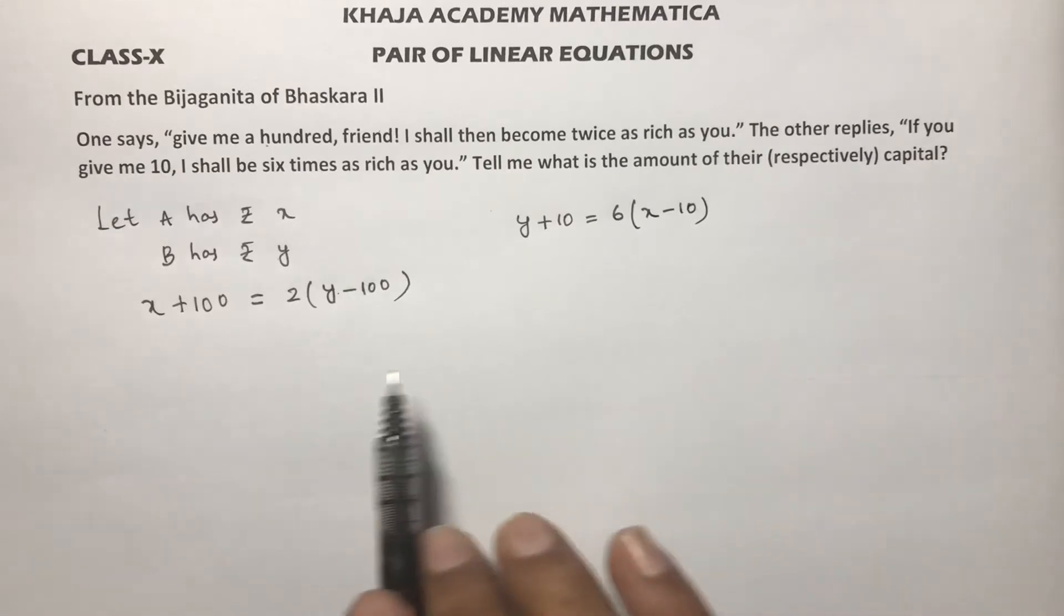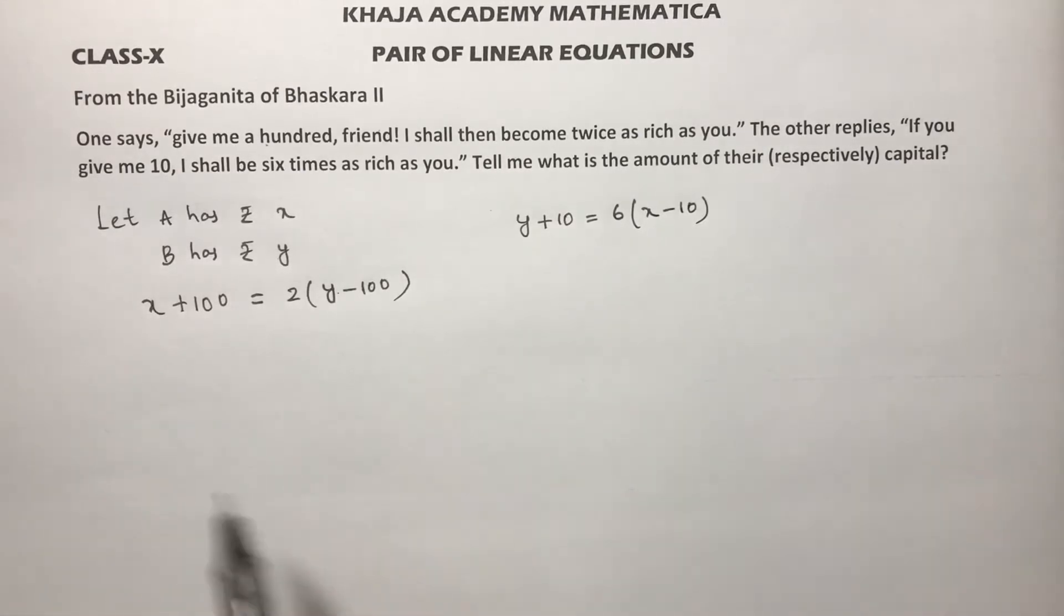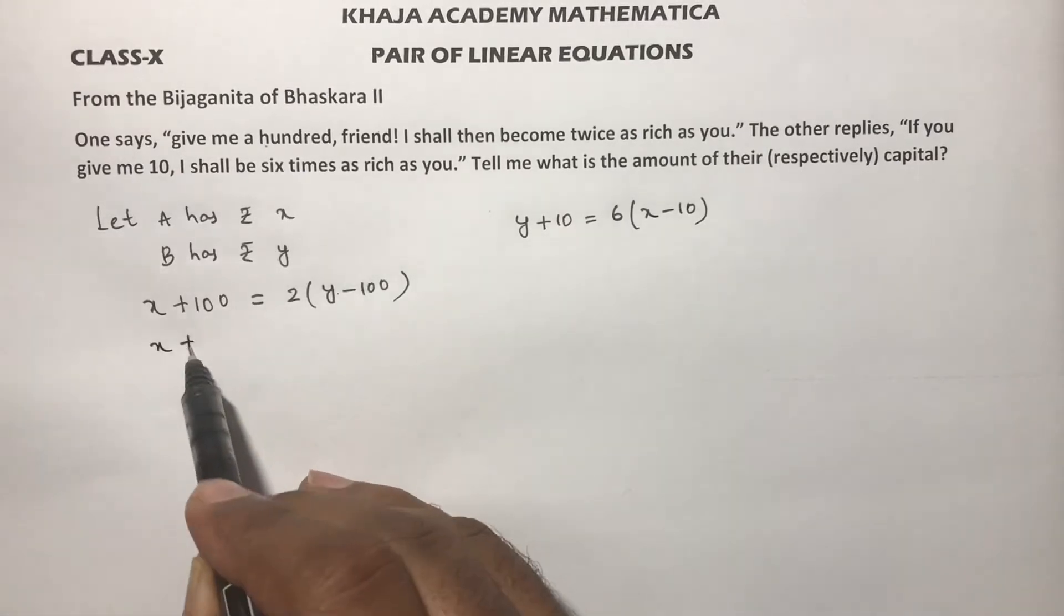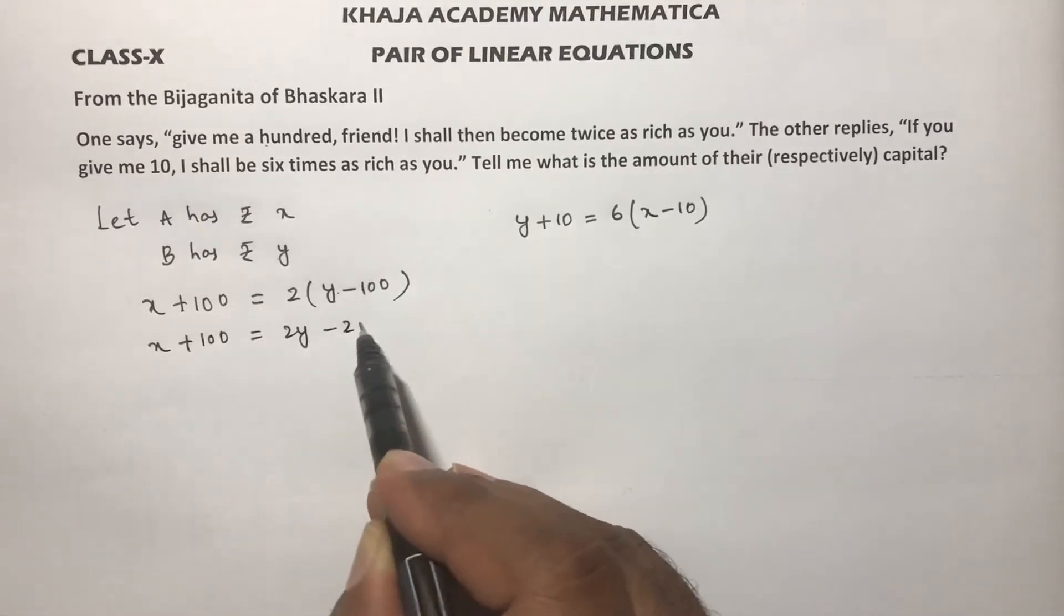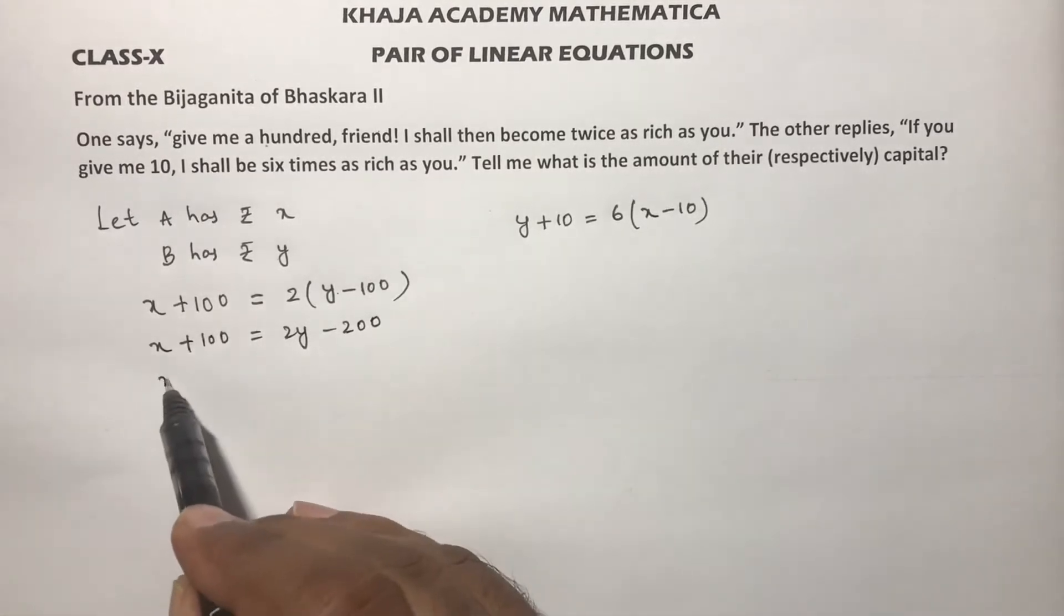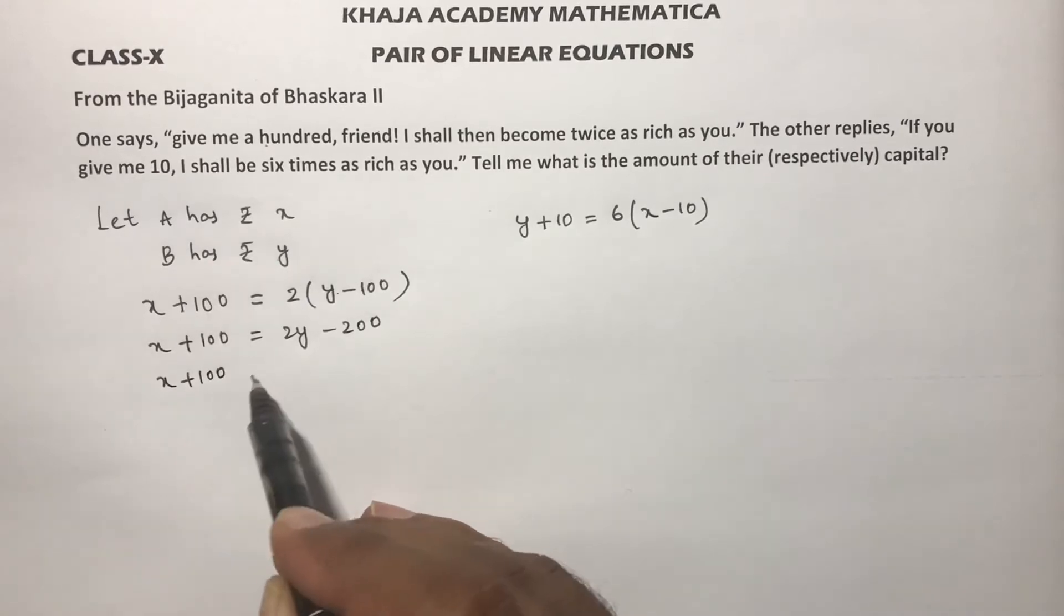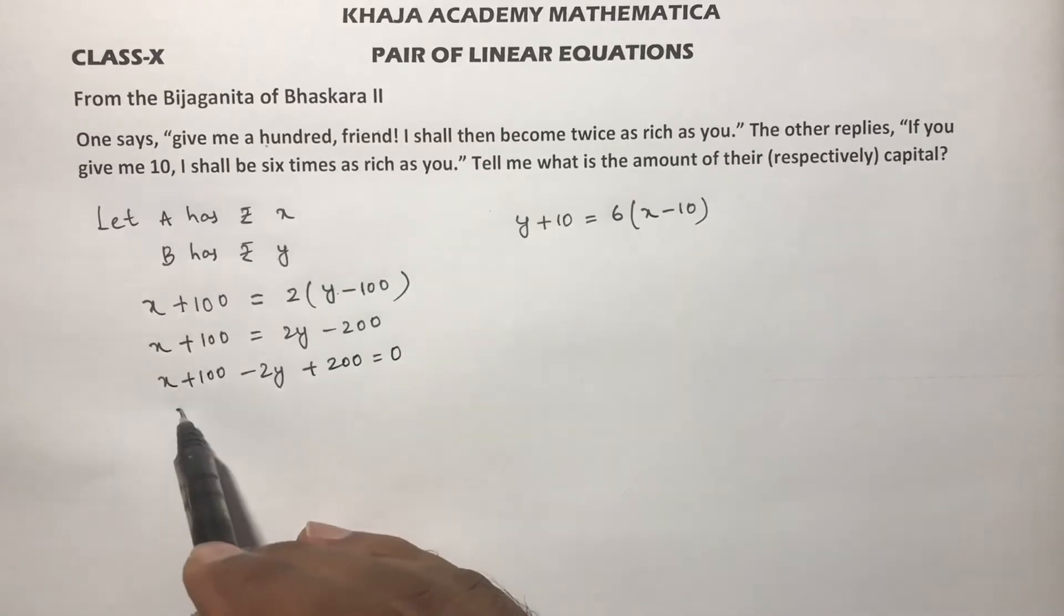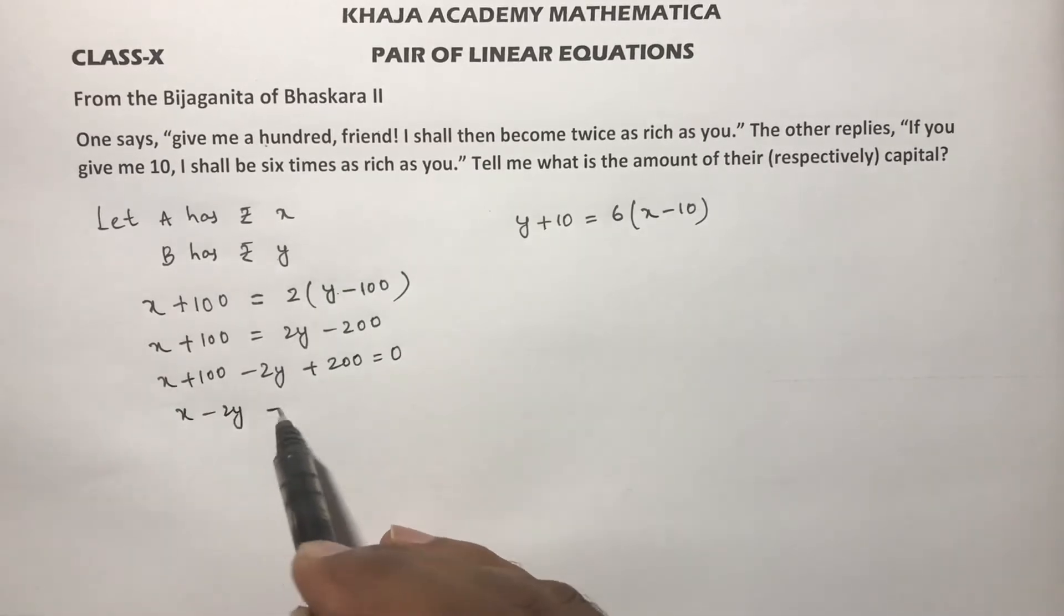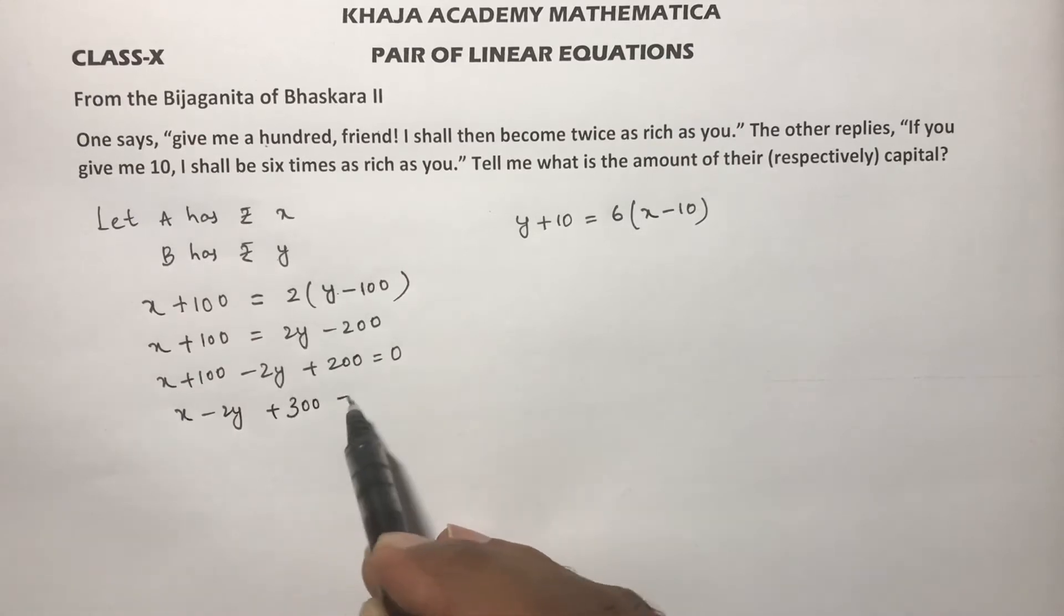So in A's account it will be x minus 10. These are the two equations. Now simplify this: x plus 100 equals 2y minus 200, so x plus 100 minus 2y plus 200 equals 0, x minus 2y plus 300 equals 0. This is one equation.